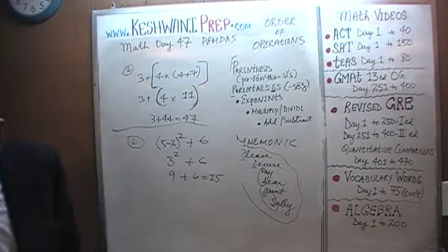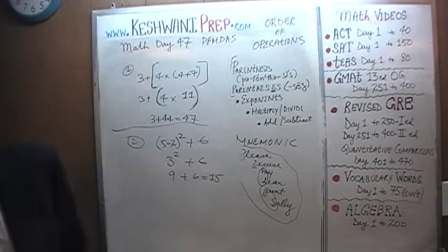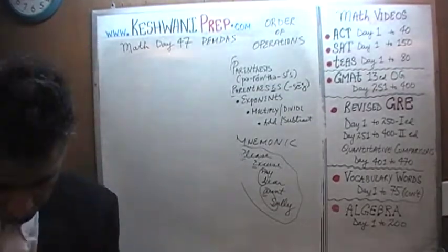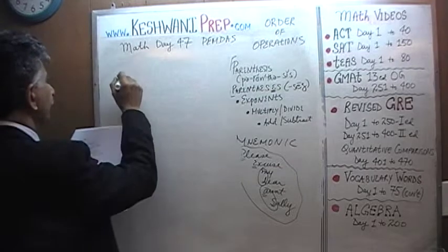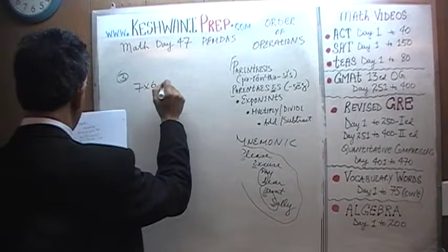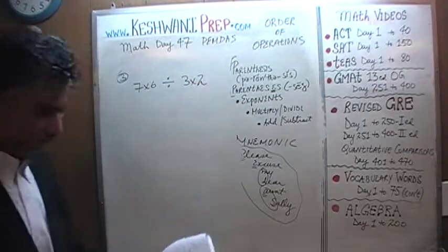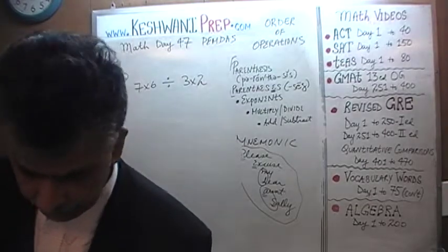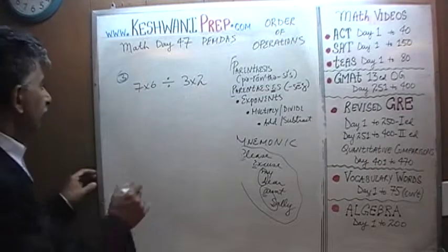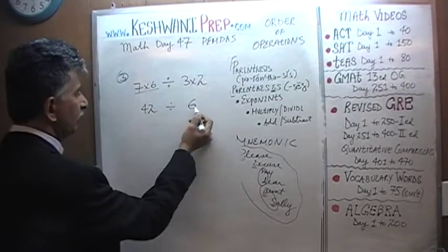Number 3 — pause the video and do it yourself, I insist on it. We have 7 times 6 divided by 3 times 2. One approach: 7 times 6 is 42, divided by 3 times 2, which is 6. Then 42 divided by 6 is 7. But listen very carefully — this answer is in fact wrong.